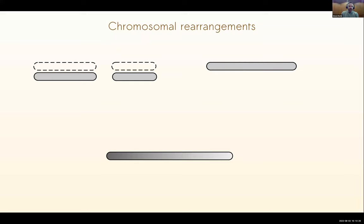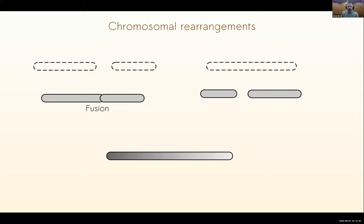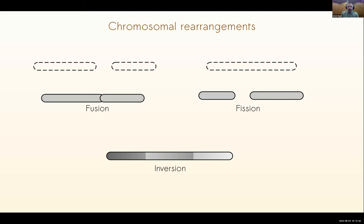In the previous slide I was talking about different types of rearrangements - let me do a quick refresher on the three types I mentioned. Chromosome fusions are when two chromosomes come together to form one. Chromosome fissions occur when a chromosome breaks into two. And chromosome inversions occur when part of the chromosome flips. Each of these has different consequences for population-level evolution.